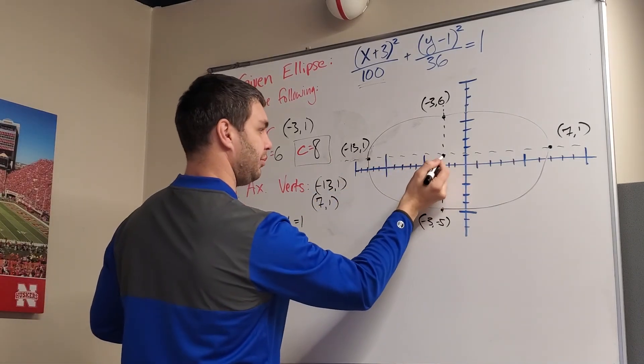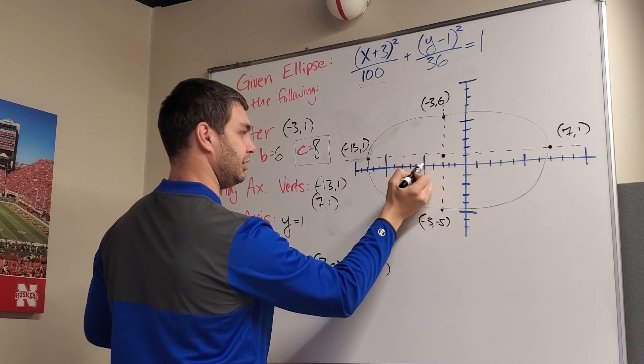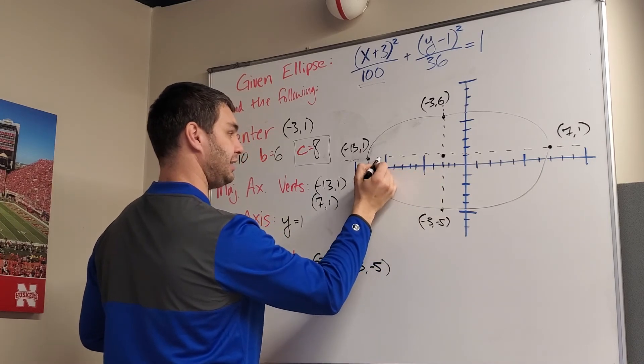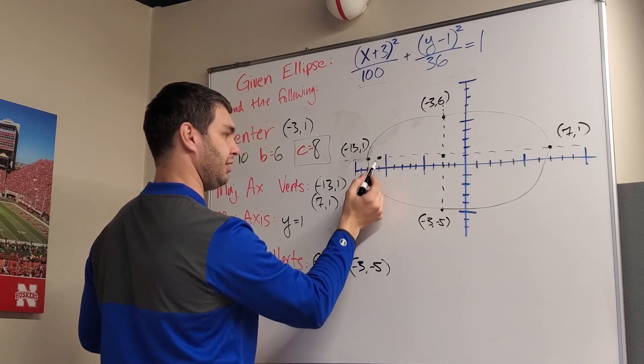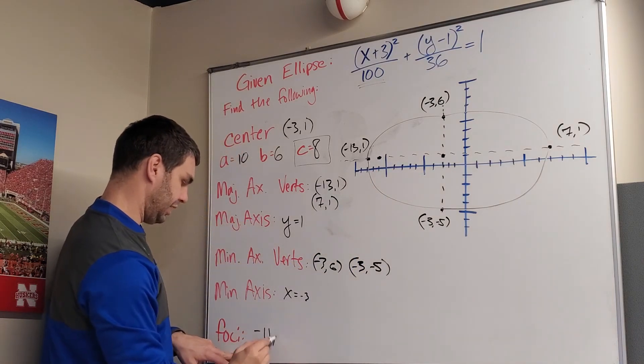So because of that, I can just go 8 in each direction from my center and plot those points. If I go 8 this way, 1, 2, 3, 4, 5, 6, 7, 8, that puts me at, what is that, (-11, 1). So (-11, 1) is one of the foci.